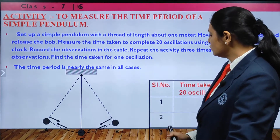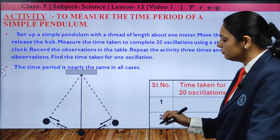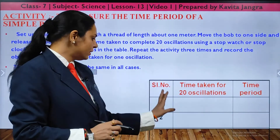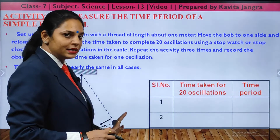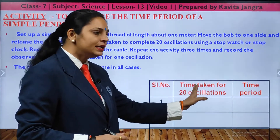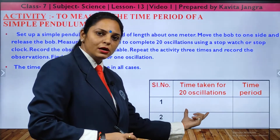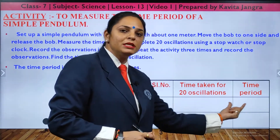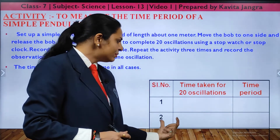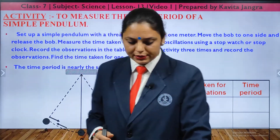For the activity, you have to count the oscillations of a simple pendulum. Take a thread, hang it with a metal ball bob, then measure the time taken for 20 oscillations. Count how long it takes to complete 20 oscillations, then repeat for the next 20, and calculate the time period.